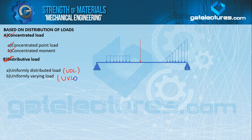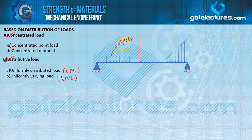Let's take a simply supported beam — with a hinge support and a roller support. In previous lectures we saw the types of supports and the meaning of determinate and indeterminate beams. This type of load is called uniformly distributed load (UDL), this type is called uniformly varying load (UVL), and this one is the concentrated point load.